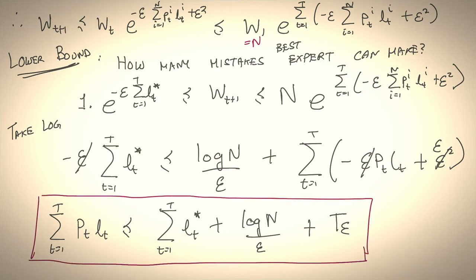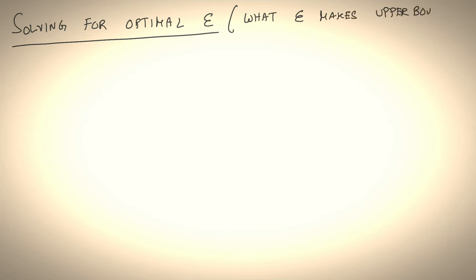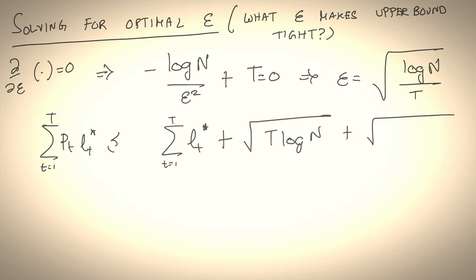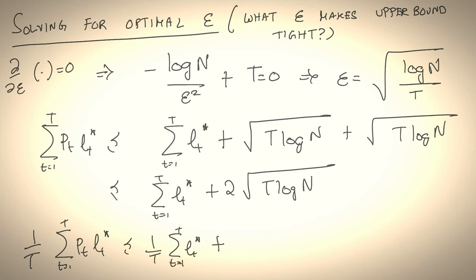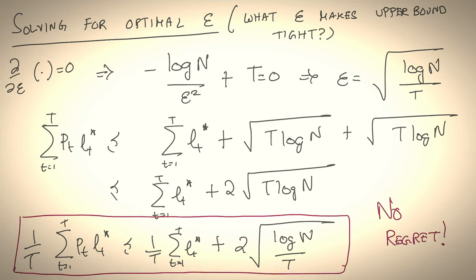You can already see that the upper and lower bounds both have terms we want for the regret. You take the logarithm to get rid of the exponential, rearrange terms, cancel epsilon on both sides, and you get that the expected loss made by the learner is bounded by the loss of the best expert plus log n over epsilon plus T times epsilon. A super neat formulation. That concludes the proof.